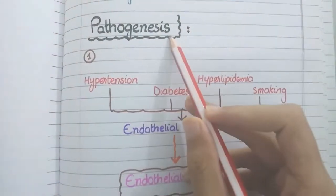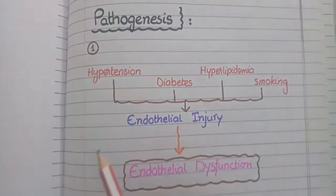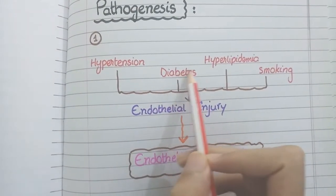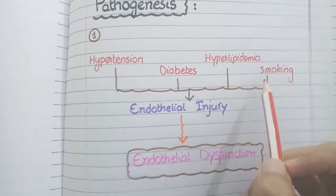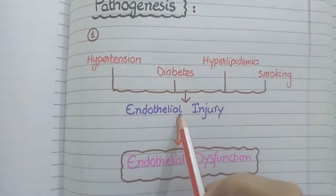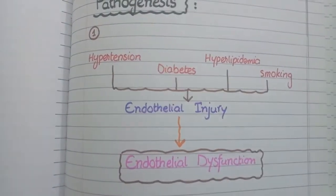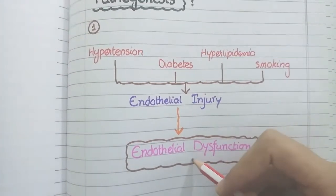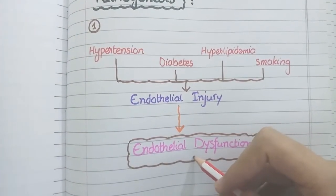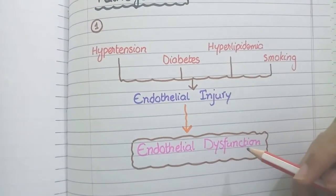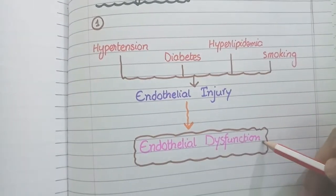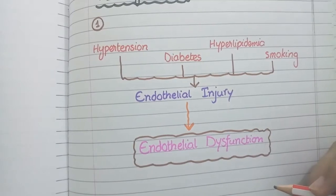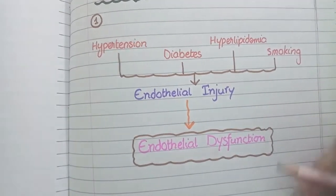Now let's come to the pathogenesis of atherosclerosis. This disease starts when risk factors such as hypertension, diabetes, hyperlipidemia, and smoking cause injury to endothelial cells. This endothelial injury results in endothelial dysfunction, meaning abnormality in the function of endothelial cells. Endothelial dysfunction is the precursor and the first process in the formation of atherosclerotic plaques.